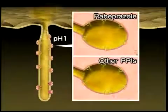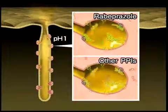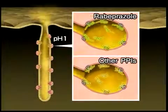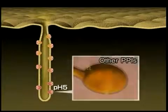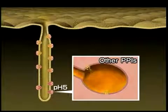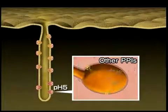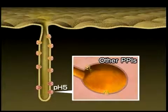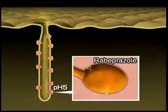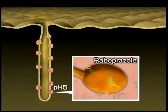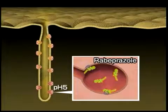Upon administration, any kind of proton pump inhibitor can generate a sufficient amount of active forms with the young parietal cells that maintain strong acidity with a pH of 1. However, it seems difficult for other proton pump inhibitors, except rabeprazole, to produce a sufficient number of active forms in the secretory canaliculi of the old parietal cells, because the acidity is mild and the pH is 4 to 5. Even in such a weakly acidic environment, rabeprazole is fully converted into its active form and efficiently inhibits the proton pump.